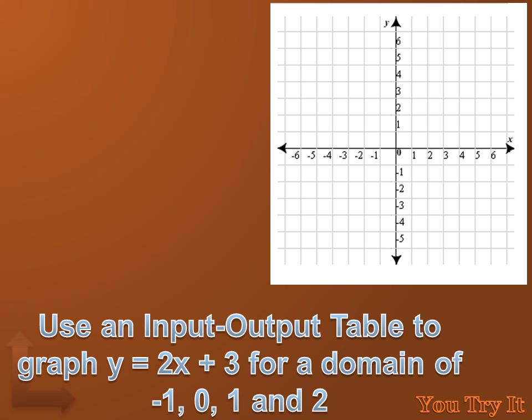Try this one. Hit the pause button, do the problem, and then hit the forward key to move on to my answer. Use an input-output table to graph y equals 2x plus 3 for a domain of minus 1, 0, 1, and 2. Well, that domain, minus 1, 0, 1, and 2, are the x values that we want to look at. So when we create our input-output table, we'll use those for x values. And then we'll input the x value into the function y equals 2x plus 3, and we'll calculate what y equals. We've got 1, 2, 3, 4 ordered pairs: minus 1, 1, 0, 3, 1, 5, and 2, 7. And all we have to do is mark those on the graph, and we've graphed the function y equals 2x plus 3.